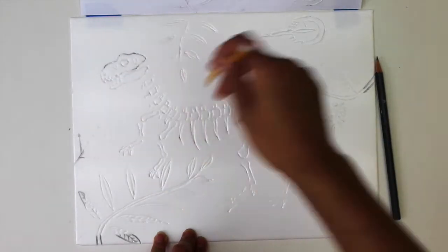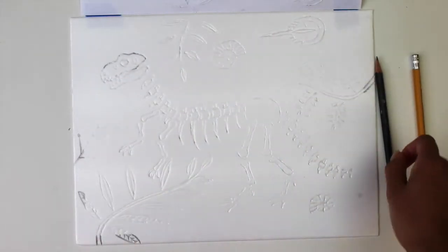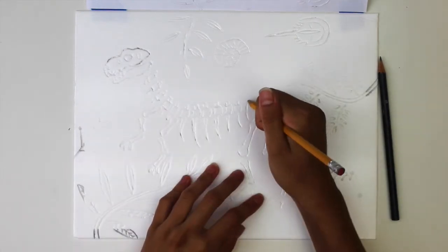Finally, we'll put sand by poking dots onto the styrofoam. Start with the dull pencil on the dinosaur.